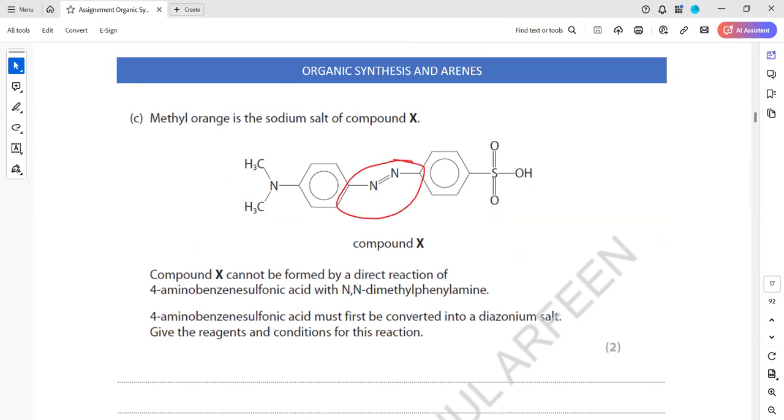And then we couple them. And the temperature should be below 10 for this to happen. And first how is the diazonium compound formed? Compound 4-aminobenzene sulfonic acid with N,N-dimethylphenylamide. 4-aminobenzene sulfonic acid must first convert into diazonium salt. Give a reagent.